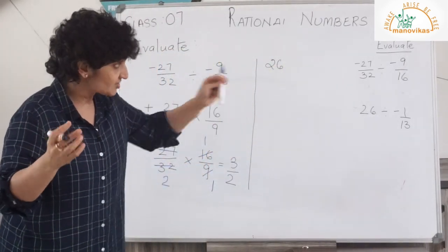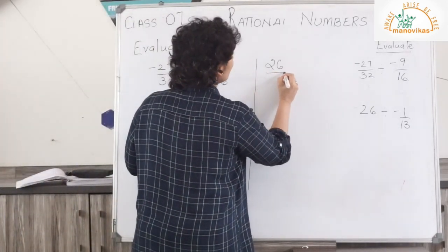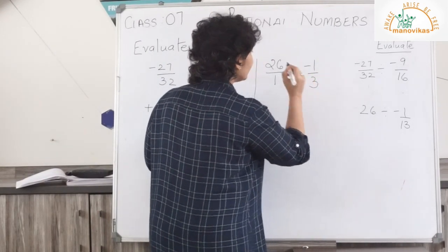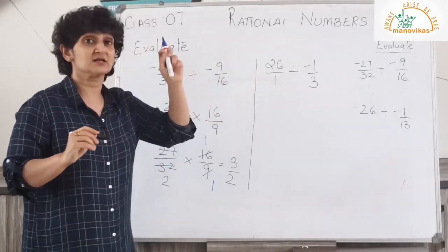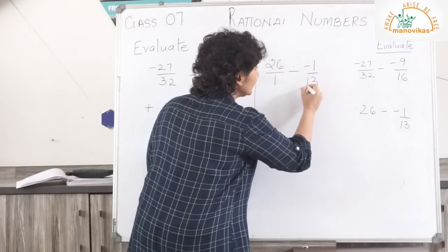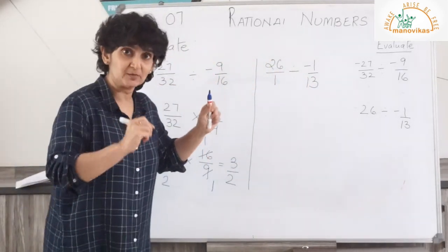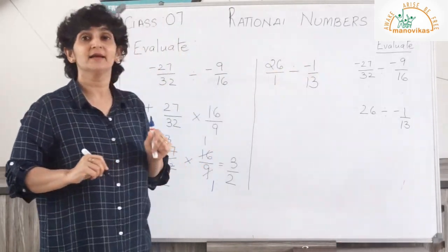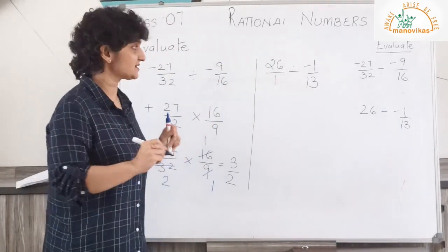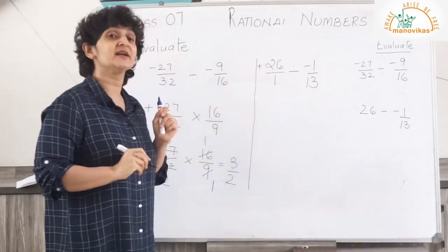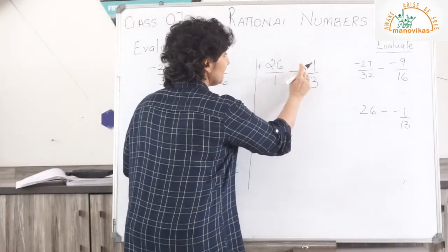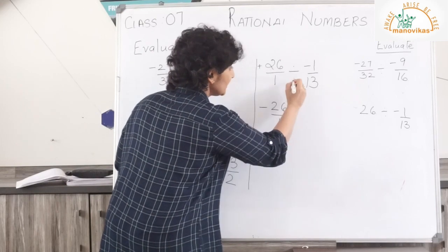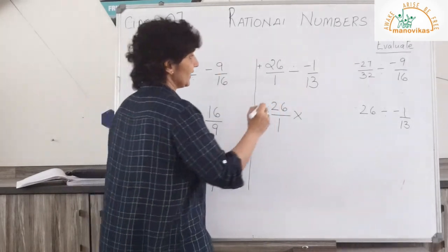We are doing rational numbers, so 26 means 26 upon 1, divided by minus 1 upon 13. Let's check the signs — when there's nothing here it means it is plus, so plus and minus gives me minus. Now 26 upon 1 divided becomes multiply, and minus 1 upon 13 would give me the reciprocal 13 upon 1.